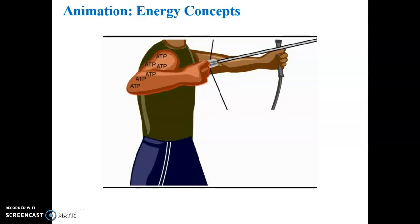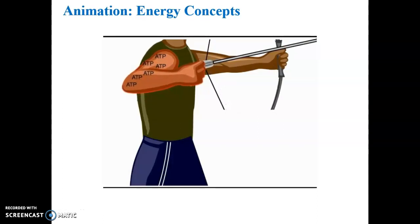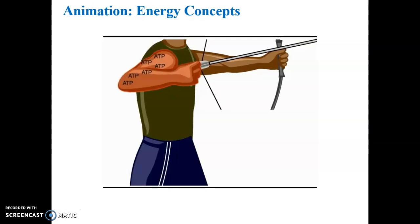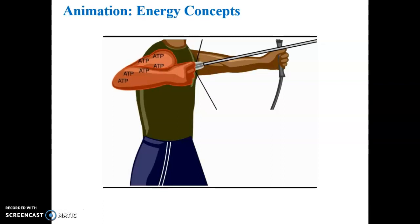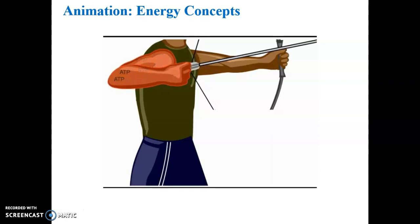The potential energy of ATP can be converted to kinetic energy. Some of that kinetic energy is used to do useful work, such as pulling back a bowstring, but the heat energy that is generated cannot be used to do work.